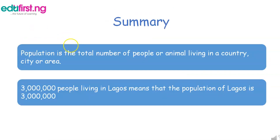Now, in this lesson we've been able to know that population is the total number of people or animals living in a country, a city, or an area. Also, if there are three million people living in Lagos, this means that the population of Lagos is three million. Thank you for listening.